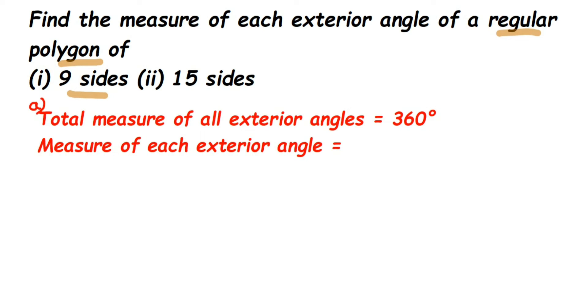Then I am going to get the measure of each exterior angle. So this will be 360 degrees divided by 9. That is a simple question. So total measure of all exterior angles is 360 degrees. Then measure of each exterior angle will be, we have to just divide by number of sides.